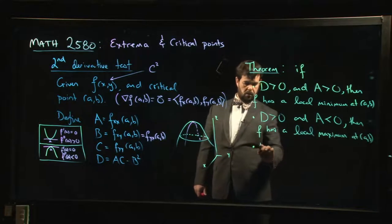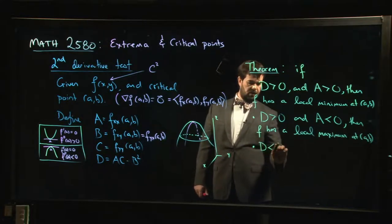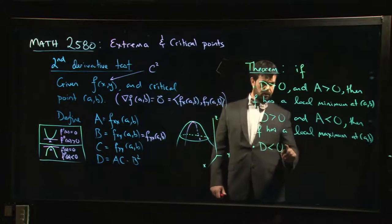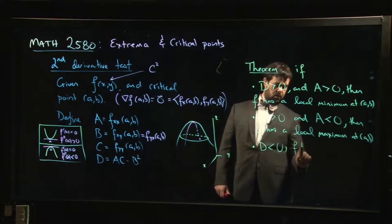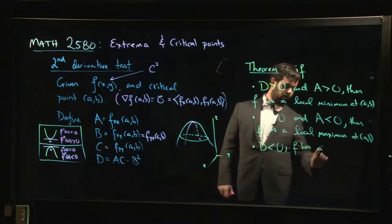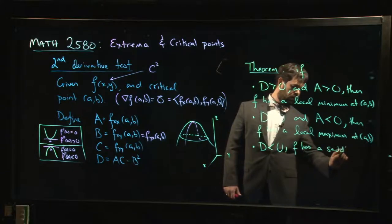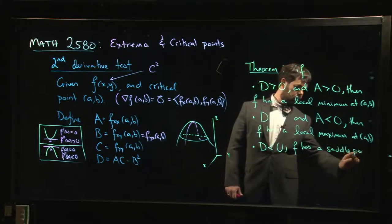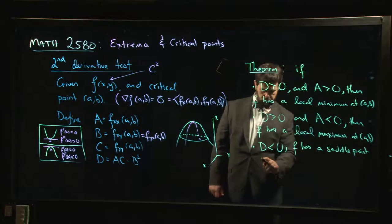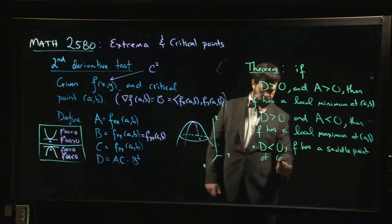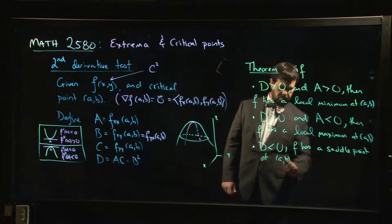If this D is negative, F has what's called a saddle point at (a,b).